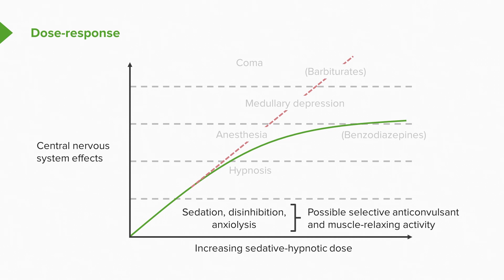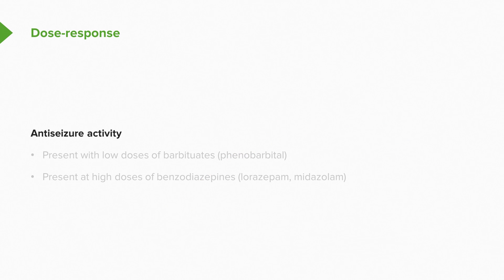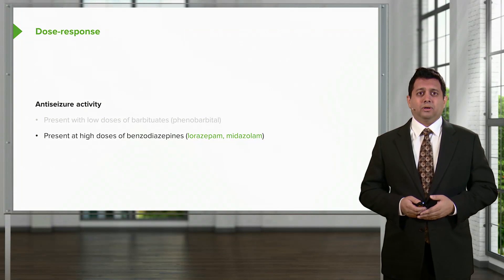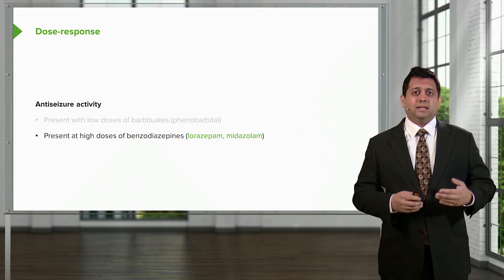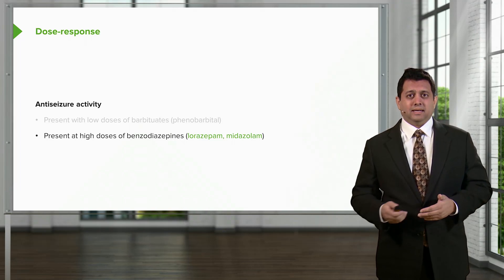Going back to our curve, let's talk a little bit more about anti-seizure activity. Now anti-seizure activity is present with both your benzodiazepines and your barbiturates. It's present at very low levels of barbiturates like phenobarbital as I mentioned before and it's present at higher doses of the benzodiazepines like lorazepam and midazolam.